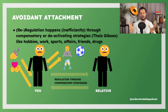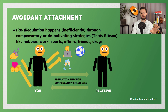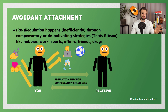The insecure avoidant type makes up around 18 to 20% of the population. People of this type are usually described as having a pseudo-independence and noticeable avoidance behaviors. What's typical for avoidant people is that they have compensating stress strategies — through hobbies, work, sports, sex affairs, friends, drugs, or other distractions.